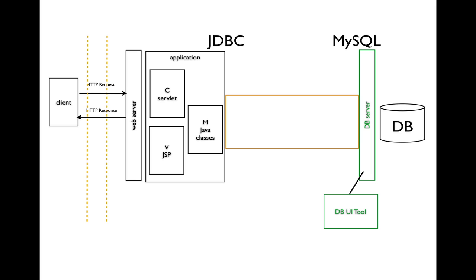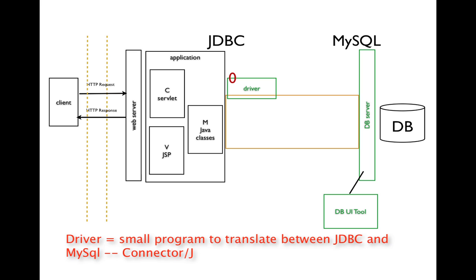Here's our diagram again, where we see a connection between our JDBC and a MySQL database server. JDBC is the technology on the Java/application server side; MySQL is the technology on the database side. To connect these two technologies, we need something that can translate JDBC commands into MySQL commands — for that, we need a driver. The one we'll be using is known as Connector J, which you can get from the MySQL website. Drivers are very specific to the two technologies used, so if you used different technologies, you'd get a different driver — such as ODBC for Microsoft to MySQL. Once you obtain the driver, you store it somewhere accessible and add it to your application.